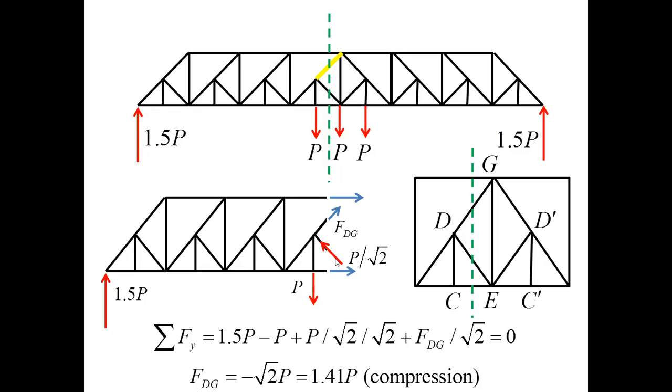Now all I have to do is to project the forces along the y axis which gives me this equation. And as a result I obtain that the force in the bar DG is compression square root of 2 P.